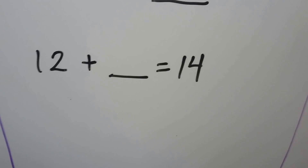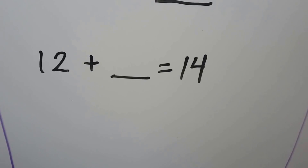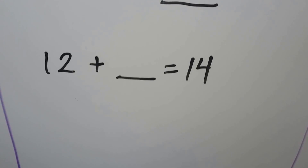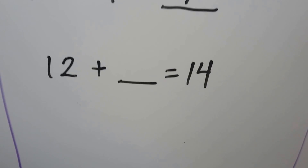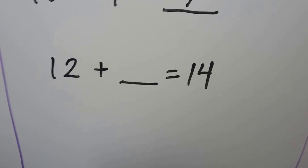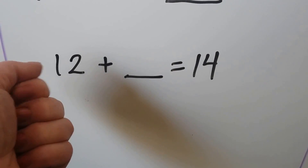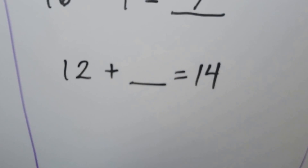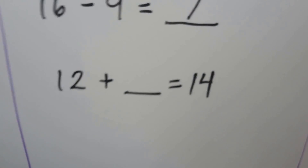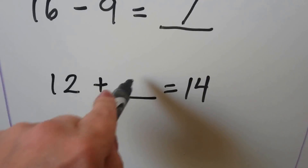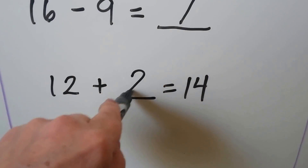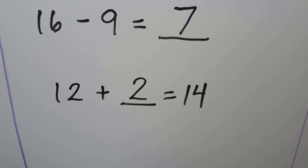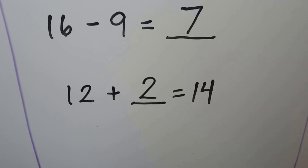12 plus some number is equal to 14. We can start at the 12 and count on to 14: 12, 13, 14 — that's 2. So 12 plus 2 is equal to 14.